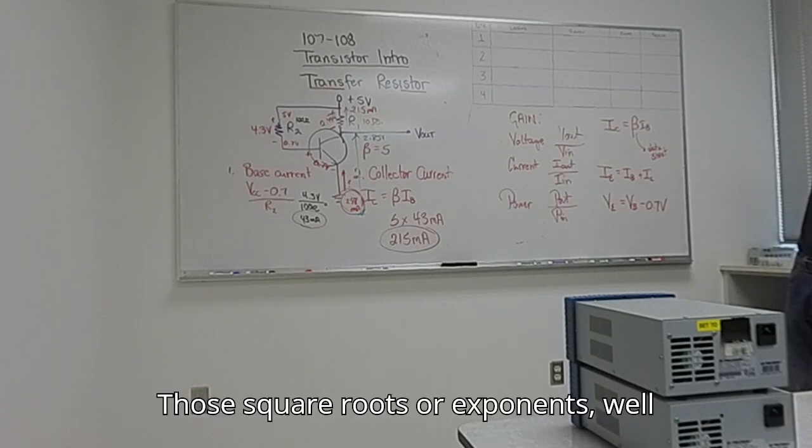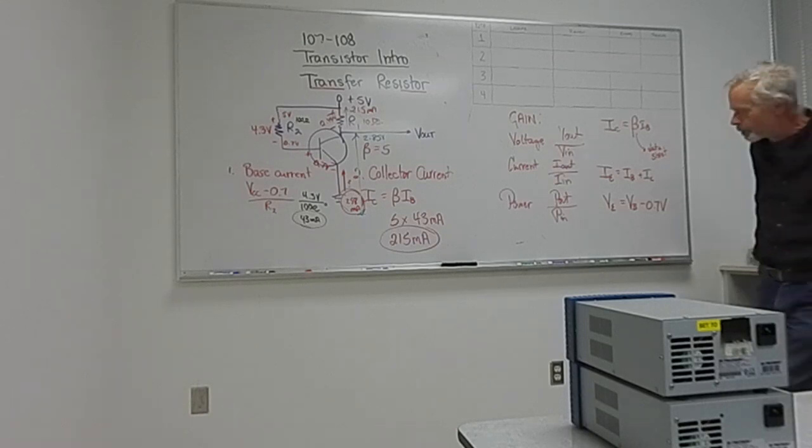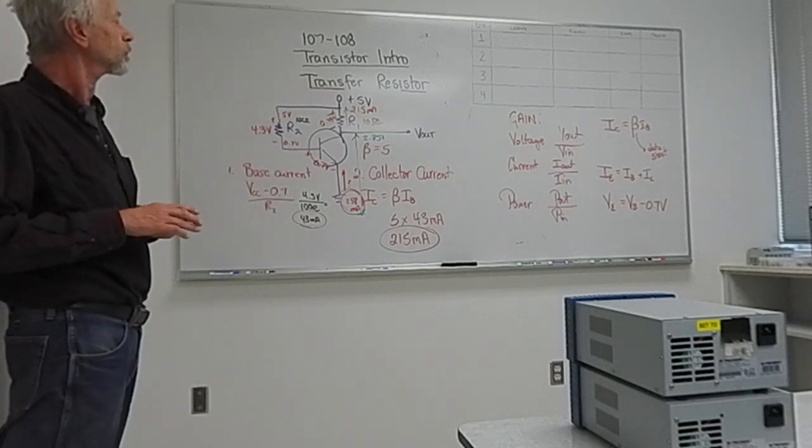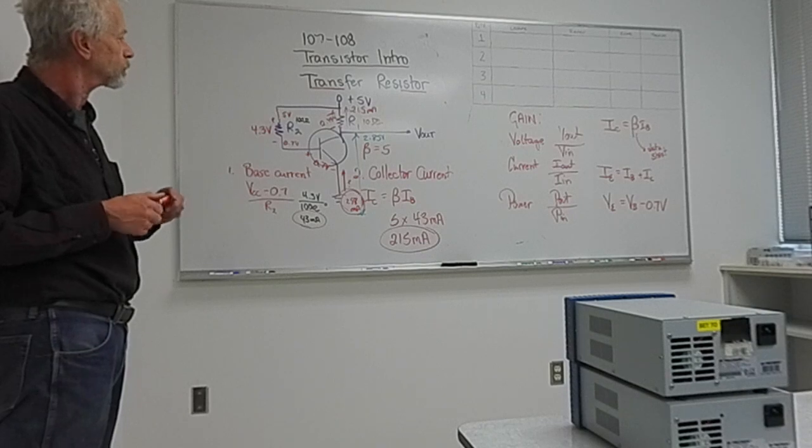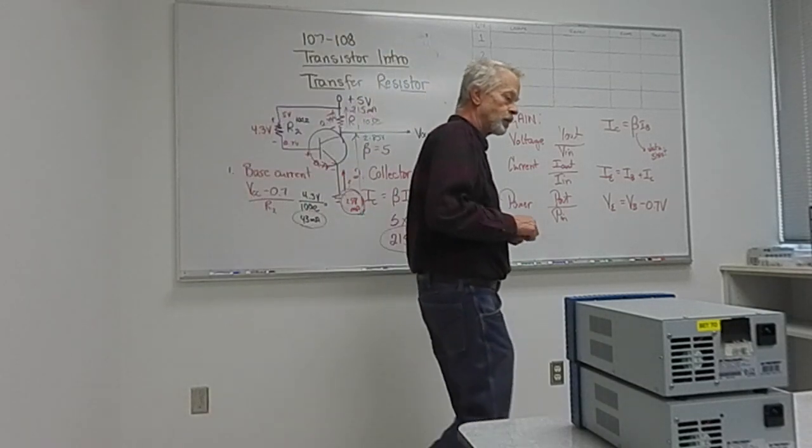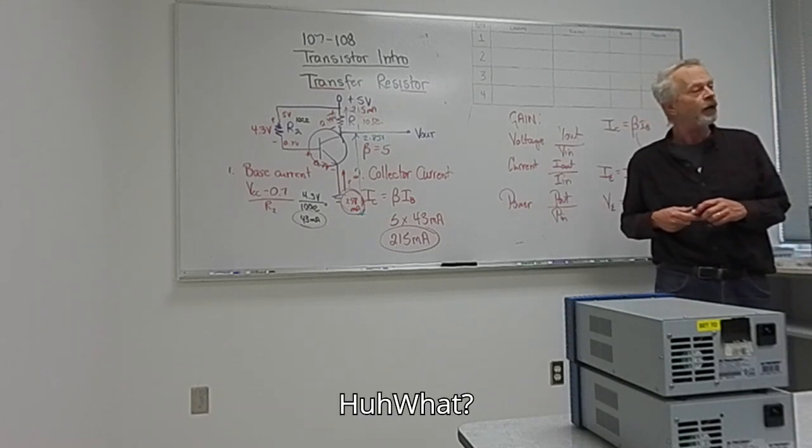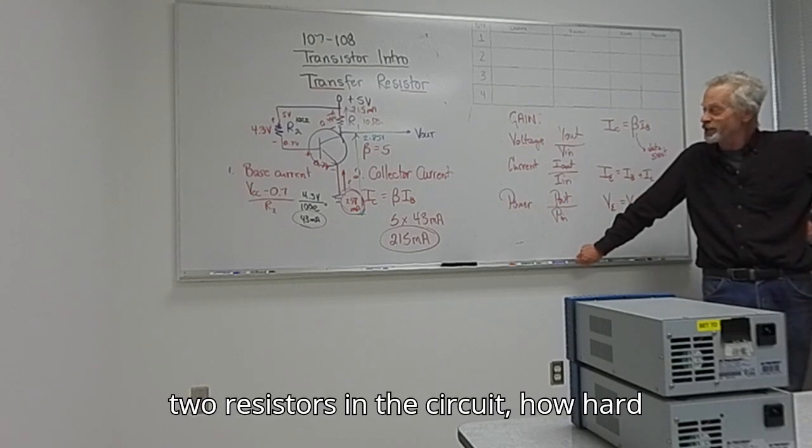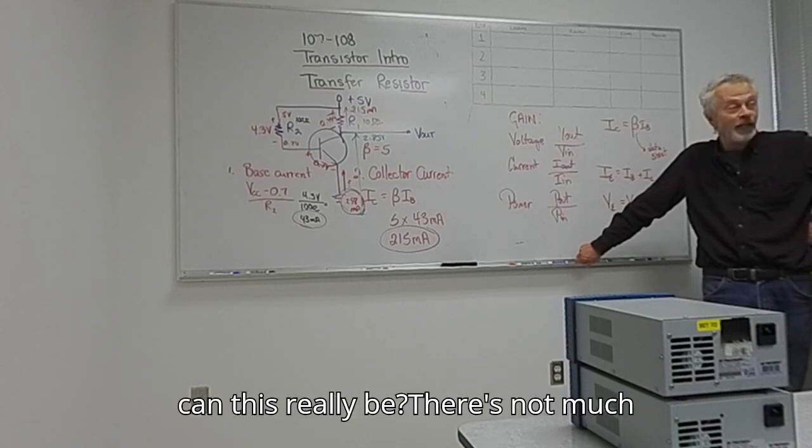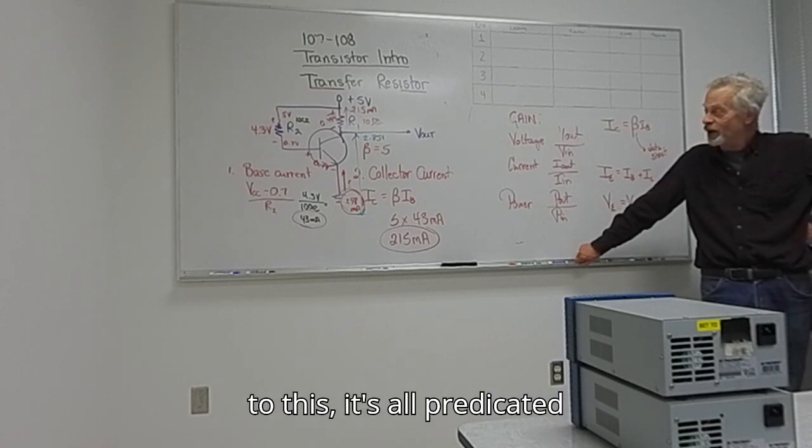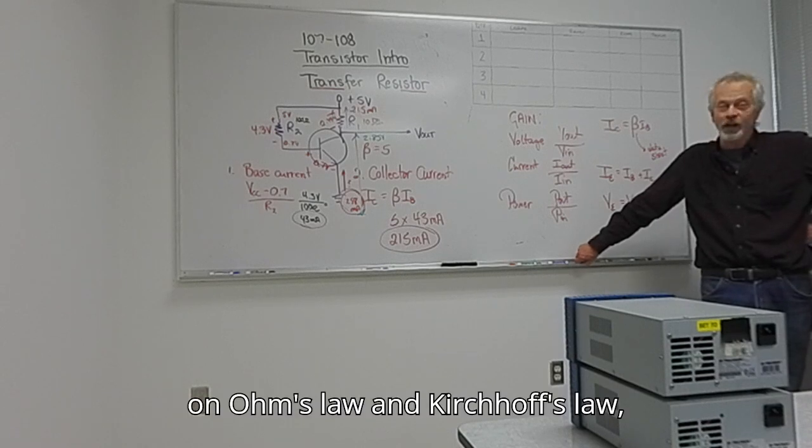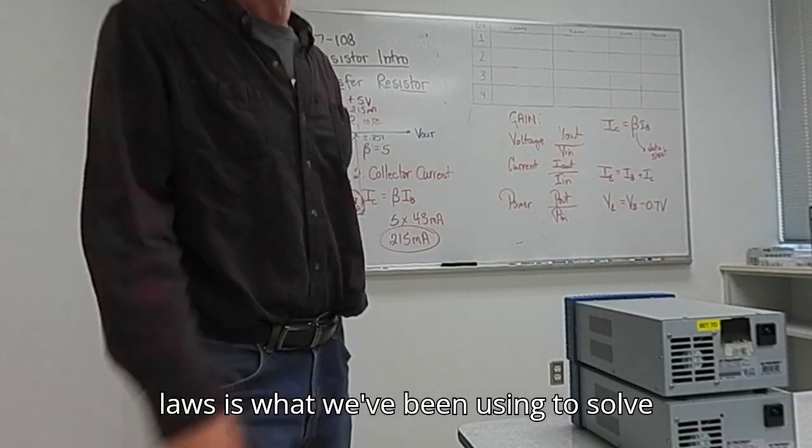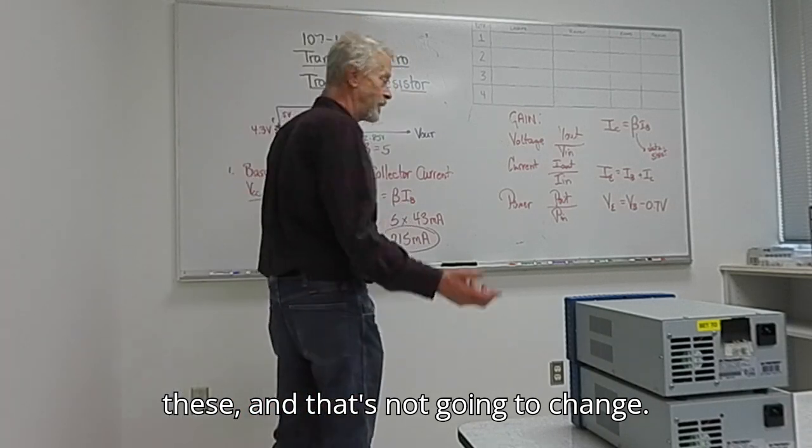Those square roots or exponents, well that day will come. So this seems really tidy, doesn't it? Everything's laid out. There's two resistors in the circuit. How hard can this really be? There's not much to this. It's all predicated on Ohm's law and Kirchhoff's law, basically. And Ohm's law, Kirchhoff's laws is what we've been using to solve these. And that's not going to change.